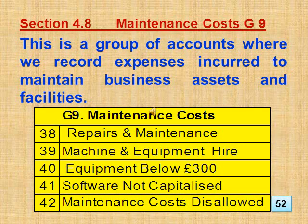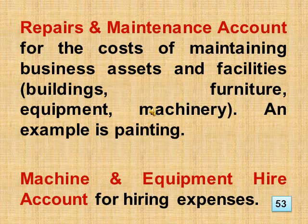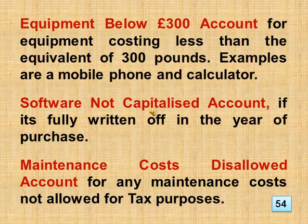Section 4.8 Maintenance Costs, Group 9. This is a group of accounts where we record expenses incurred to maintain business assets and facilities. This includes repairs and maintenance, machine and equipment hire, equipment below £300, software not capitalized, plus maintenance costs disallowed. Repairs and maintenance account covers the costs of maintaining business assets and facilities — buildings, furniture, equipment, machinery — for example, painting. Machine and equipment hire account covers hiring expenses. Equipment below £300 account covers equipment costing less than £300 — examples are a mobile phone and calculator. Software not capitalized account applies if it's fully written off in the year of purchase. Maintenance costs disallowed account covers any maintenance costs not allowed for tax purposes.